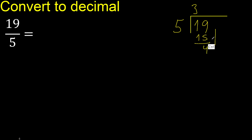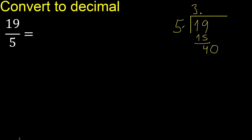Next — that is not a number, therefore complete. Always complete with 0 here, with a decimal point. 0 point — 40. 5 multiply by 8: 40 — ok, 40 is not greater. 40 minus 40 is 0.